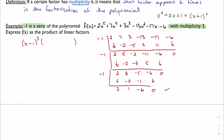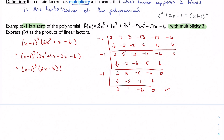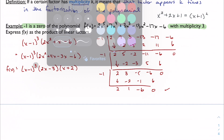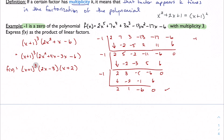So I have 2x² + x − 6 remaining, which I can factor by grouping — expanding to 2x² + 4x − 3x − 6, giving (2x − 3)(x + 2). Also, I need to correct myself: since −1 is a zero, the factor is x + 1, not x − 1. So the full factorization is (x + 1)³ · (2x − 3) · (x + 2) — (x + 1) appears three times showing the multiplicity, then the remaining linear factors.